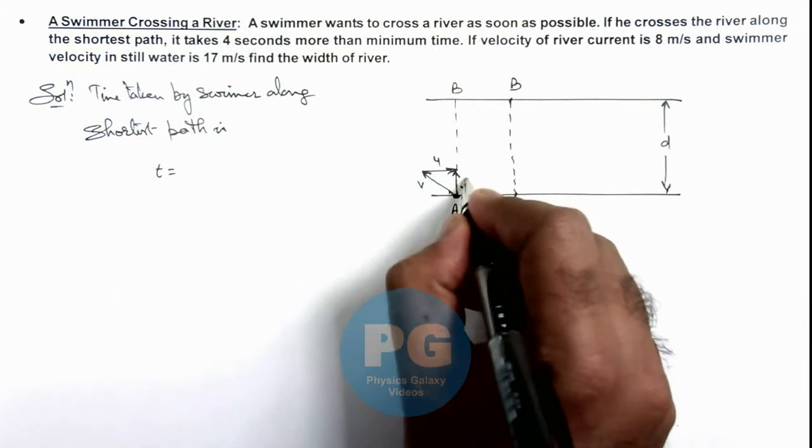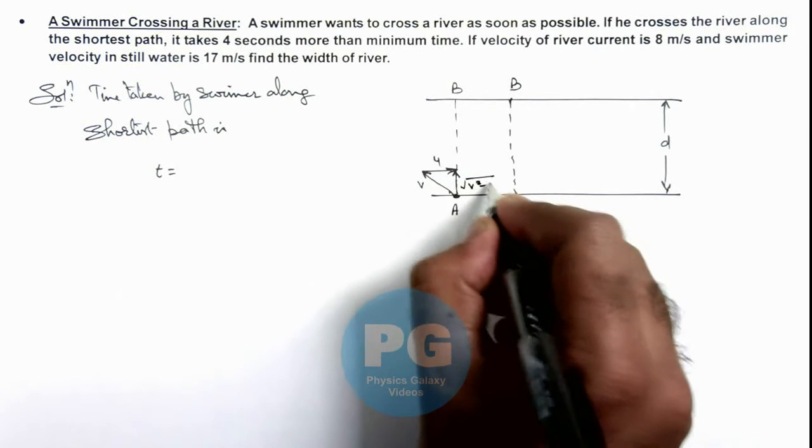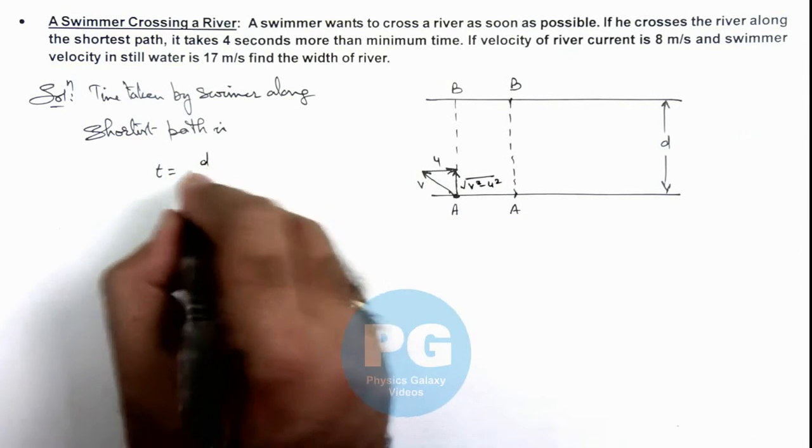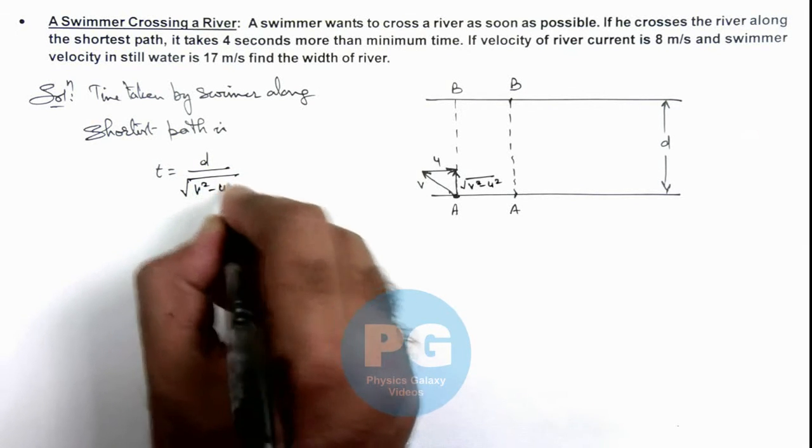Now we can write this speed with which he'll cross is root of v square minus u square. So here T will be d divided by root of v square minus u square.